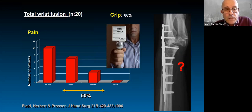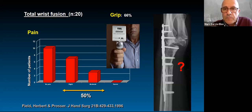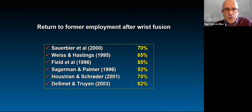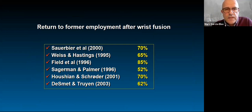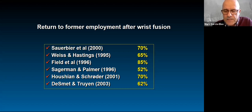In 20 patients followed long enough, more than half had slight or moderate pain after total wrist fusion. It's not true that they recover all function — the group gets an average of 66% grip strength back. Return to employment figures are 60-70%, sometimes less, of patients who can go back to normal life because the wrist is rigid. You cannot play guitar with a fused wrist. You cannot beat an egg. There are so many small things you cannot do — so be careful before offering fusion just because you don't know what else to do.